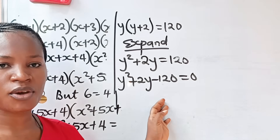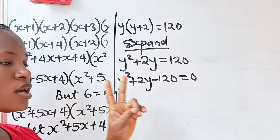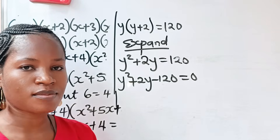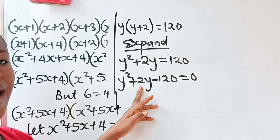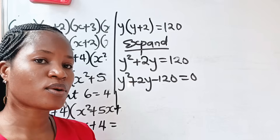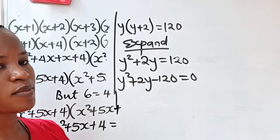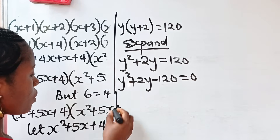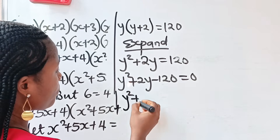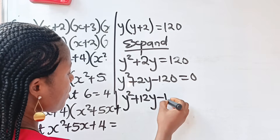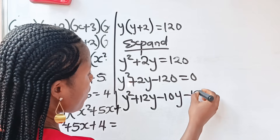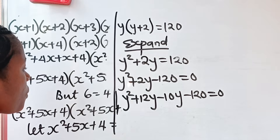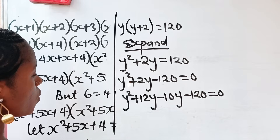We now have a quadratic equation to solve. We need two factors of 120 that add up to two. Those factors are 12 and minus 10, since 12 plus minus 10 equals two and 12 times minus 10 equals minus 120. So we rewrite as y squared plus 12y minus 10y minus 120 equals zero.